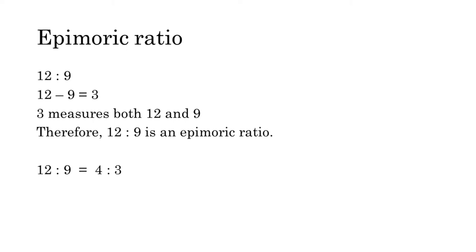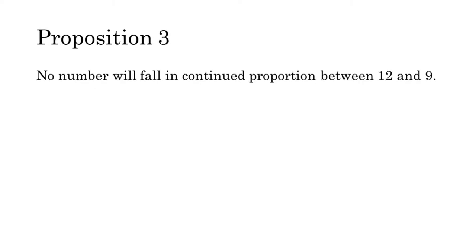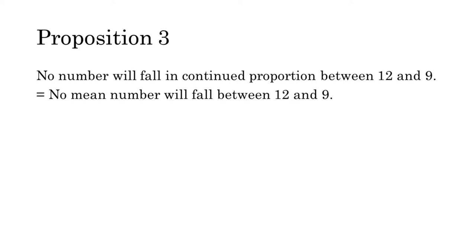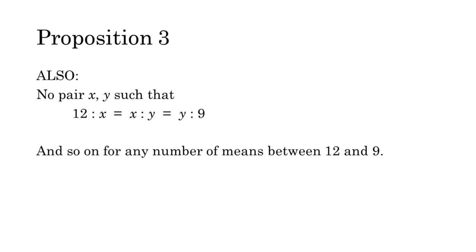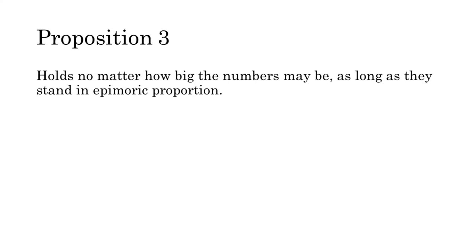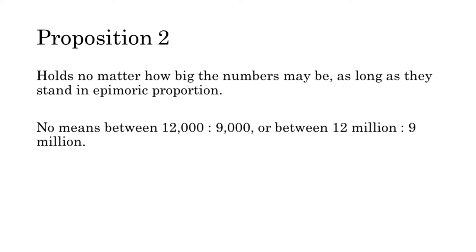This proposition asserts that no number will fall in continued proportion between 12 and 9 — that is, no mean number will fall between 12 and 9. A fancier way to put it: we cannot find any number x such that 12 is to x as x is to 9. Not only can we not find one mean, but we can't find any number of means — so we also won't be able to find a pair of numbers x and y such that 12 is to x as x is to y as y is to 9, and so on for any number of means you choose. This proposition holds no matter how big the pair of numbers may be, as long as they stand in an epimoric proportion. So between 12,000 and 9,000, or between 12 million and 9 million, no mean will fall in proportion.